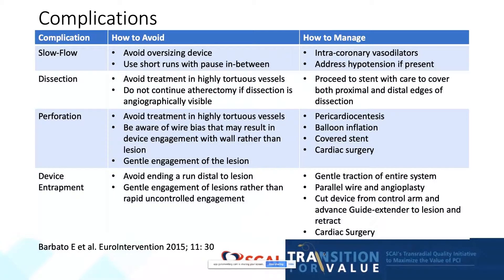Complications: the most common complication with atherectomy use is slow flow. This can be avoided by not using oversized devices and using short runs with sufficient pauses in between. Should slow flow be appreciated, intracoronary vasodilators such as adenosine, nitroprusside, or calcium channel blockers may be beneficial. Should the patient have systemic hypotension, it should be treated as well.